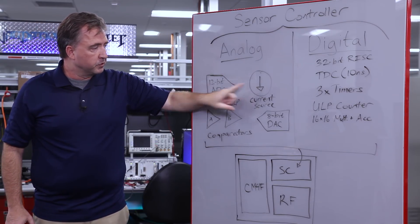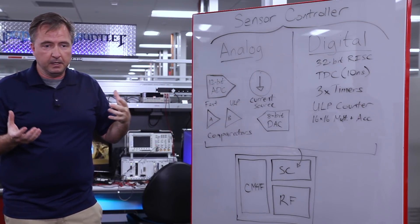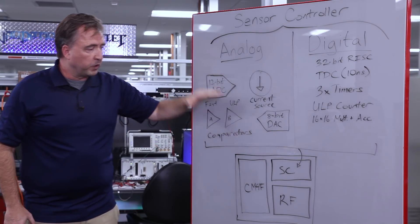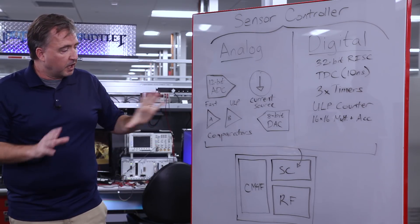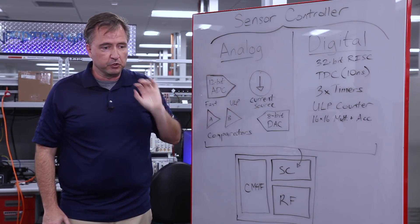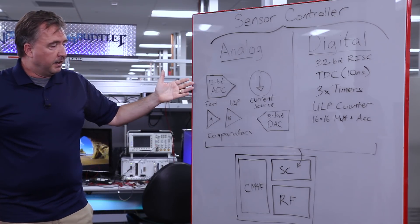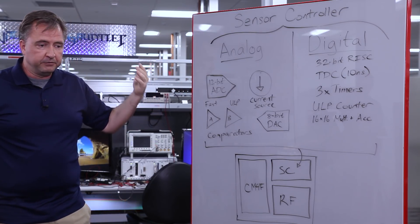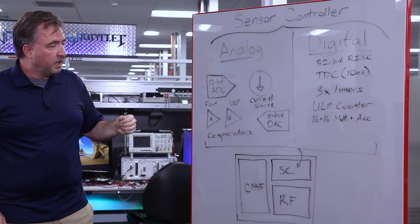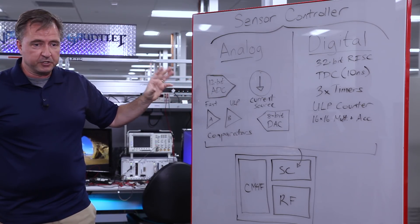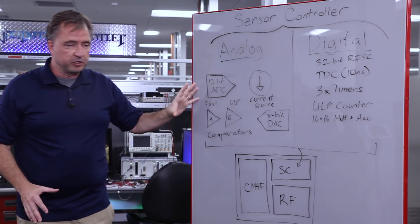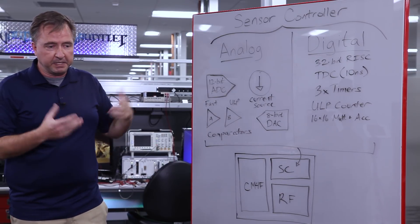With a current source and an external resistor you could build a basic temperature sensing element. With the DAC you can program a feedback loop. It's really up to the customers and their own creativity about what kind of solution they can solve with this. In Sensor Controller Studio we have seven or eight out-of-box examples, including a software-based UART — which shows you the sensor controller can do things it wasn't originally intended to do just by adding software.